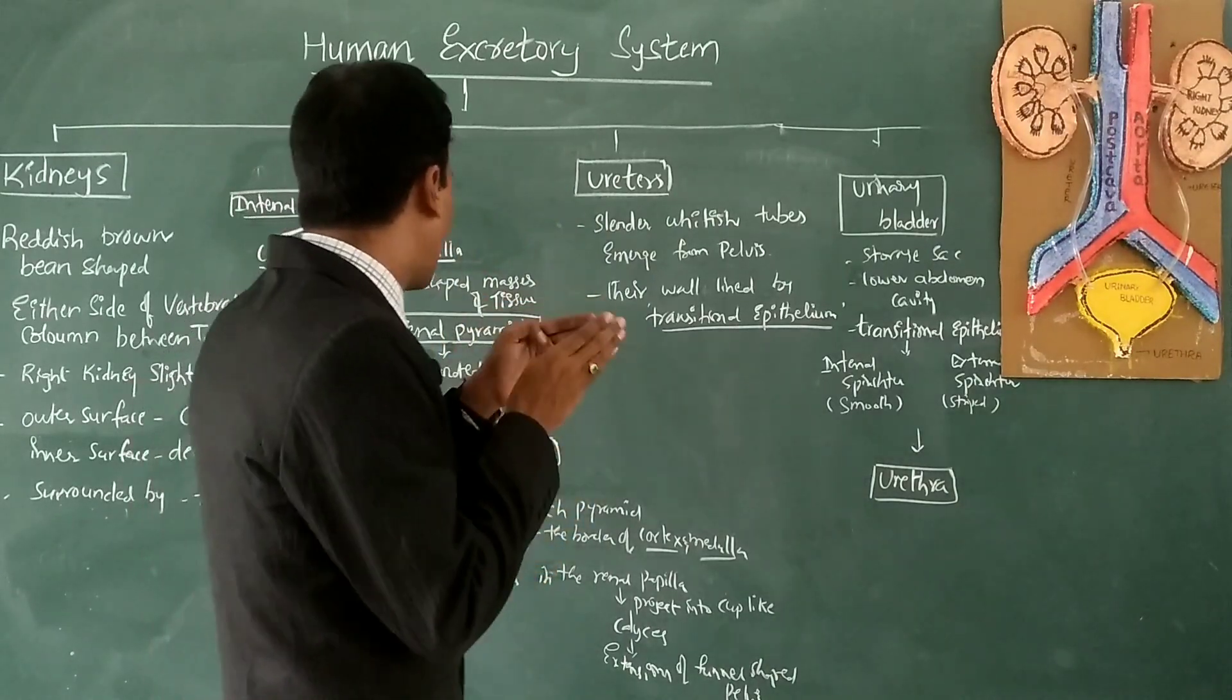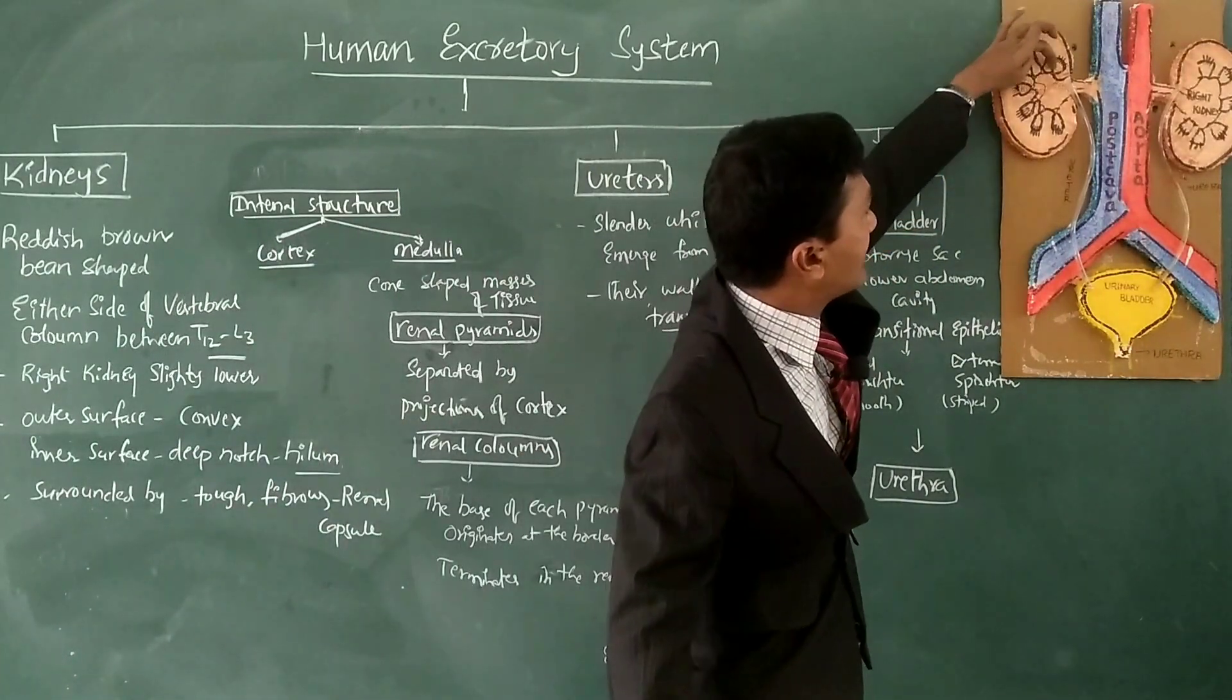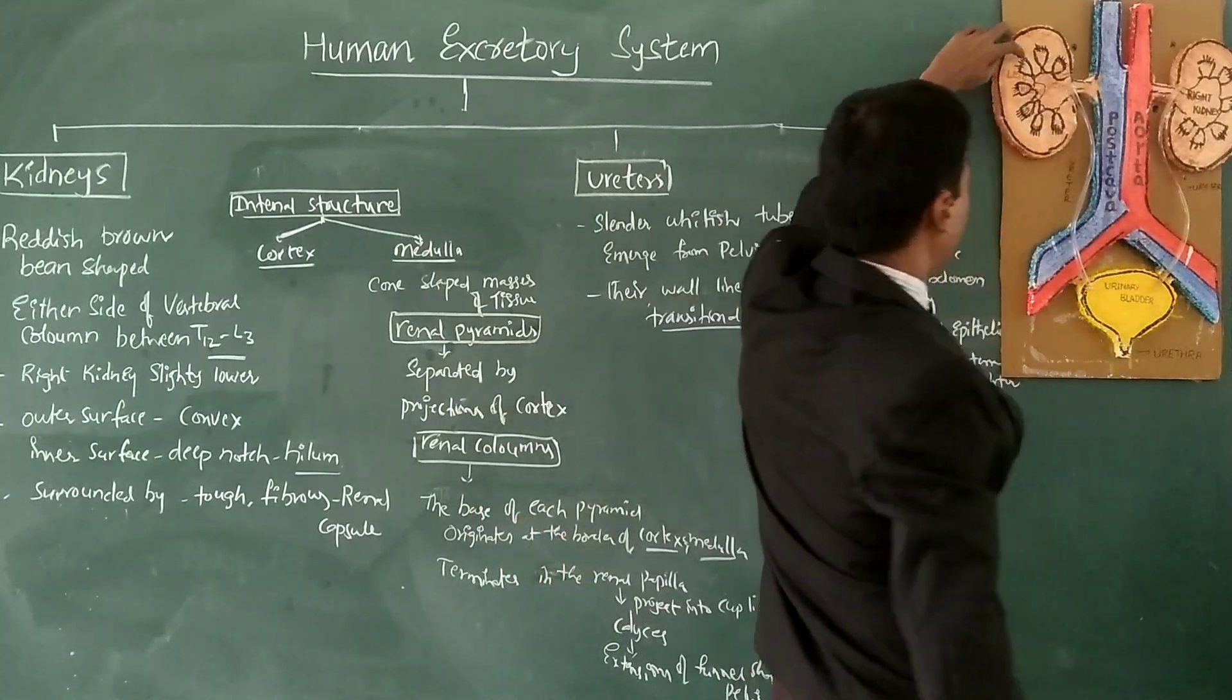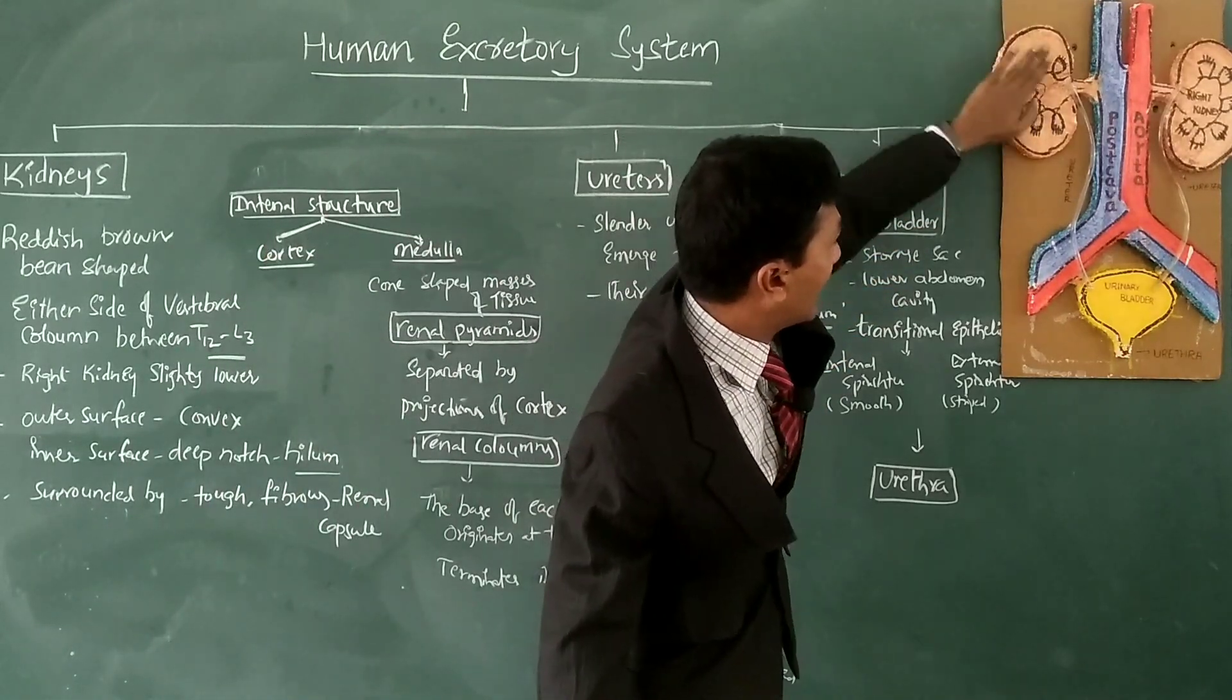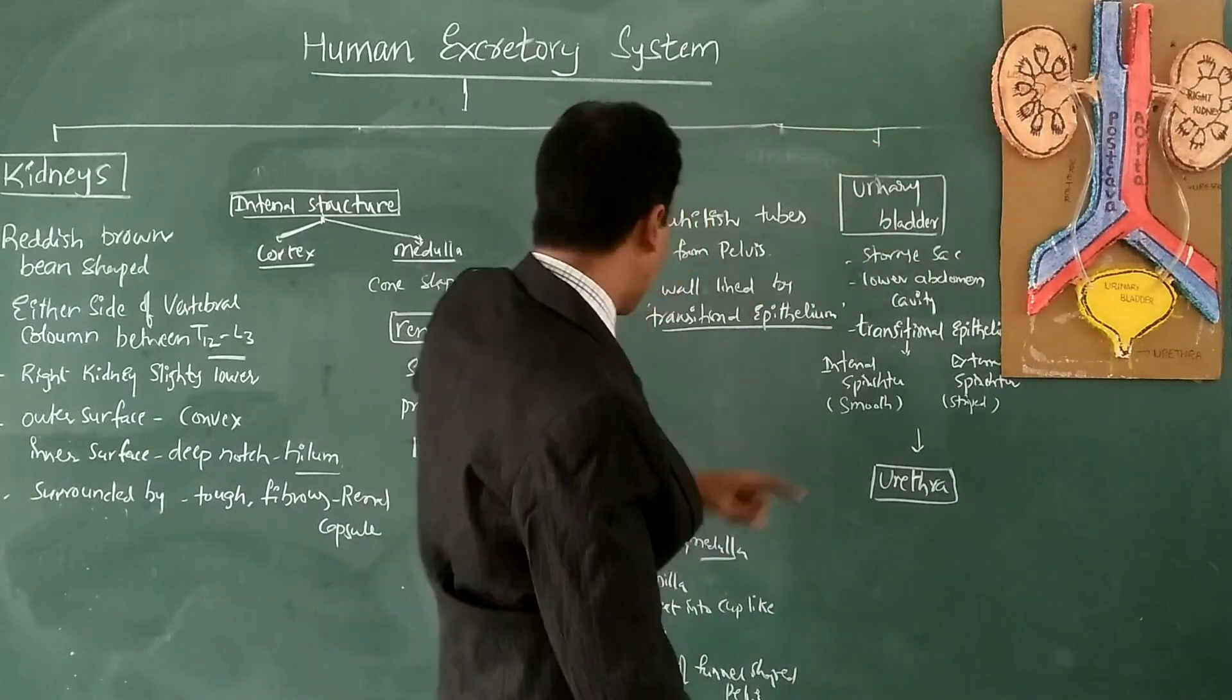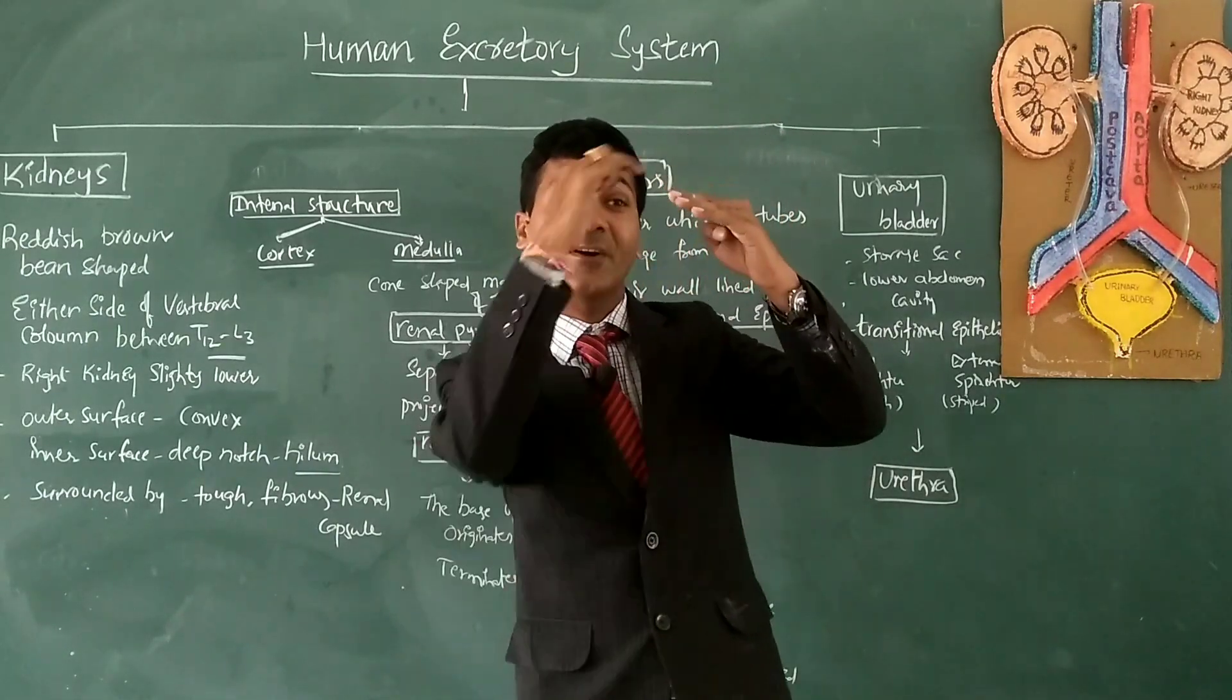Each renal pyramid is separated by projections of cortex. These separating structures are known as renal columns or columns of Bertin. The base of each pyramid originates at the border of cortex and medulla, and terminates at a structure known as the renal papilla.